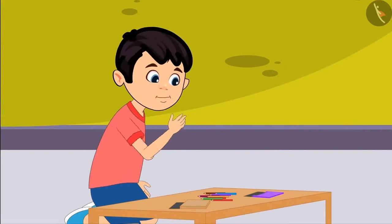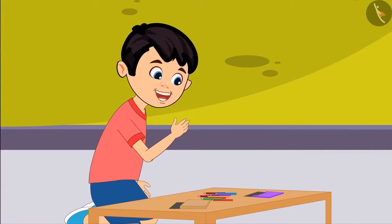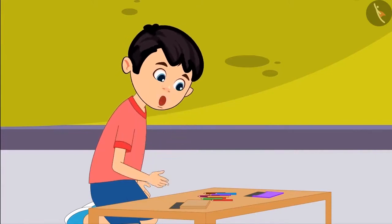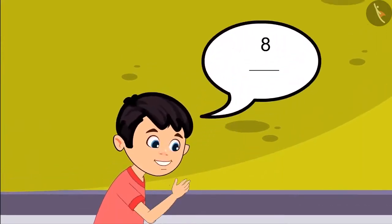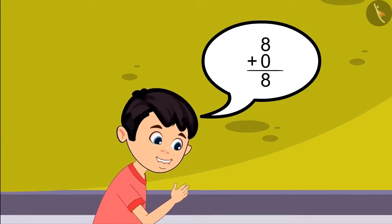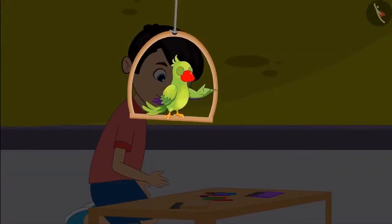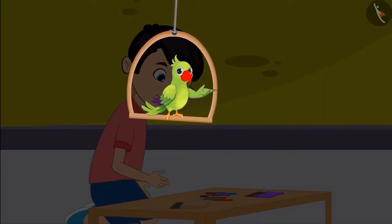When we add objects to some more objects, the total number increases. But one box has eight colors and the other box has zero colors, so the total number of colors is still eight. Children, did you see? When Chotu added the colors of the two boxes, one box was empty — it had zero colors — and the other had eight, so Chotu has eight colors in total.